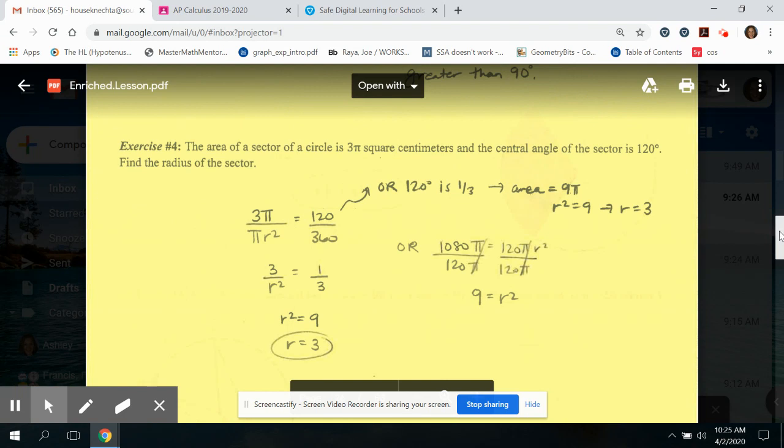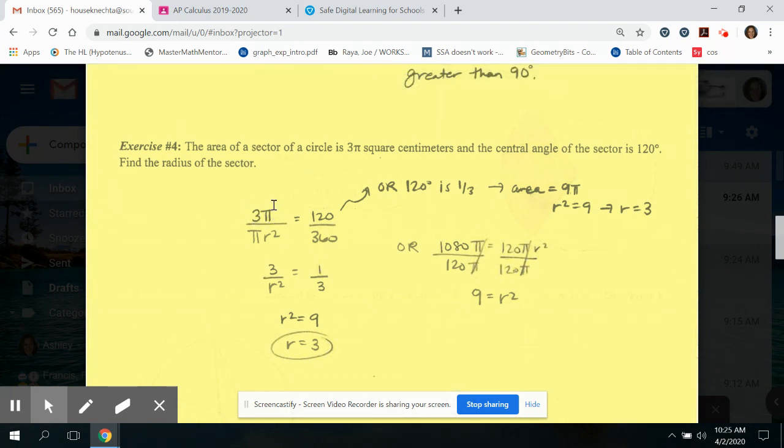This one, a little bit more complicated. I don't know if I'm going to stress this as much, but I might as well go through it. In this case, I'm saying the area of the sector is 3 pi square centimeters. So again, I'm giving you the fact that you know that area. The central angle is 120. So 120 out of 360. You can reduce that to a third or just leave it alone. That's fine. And then I want the radius. So I left pi r squared, left the radius alone. That's my variable.